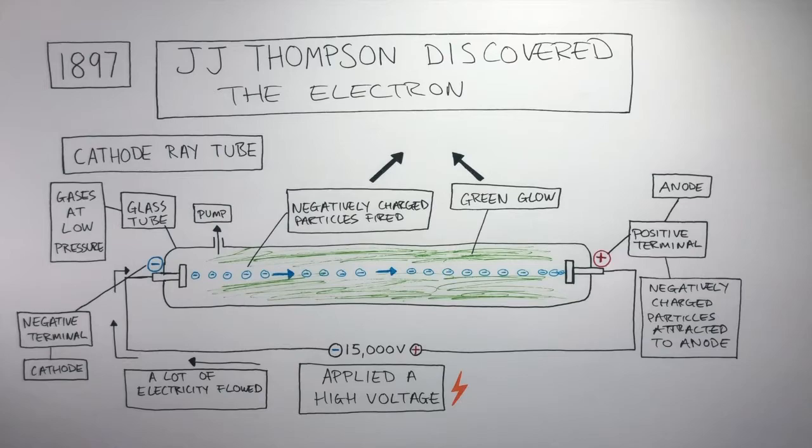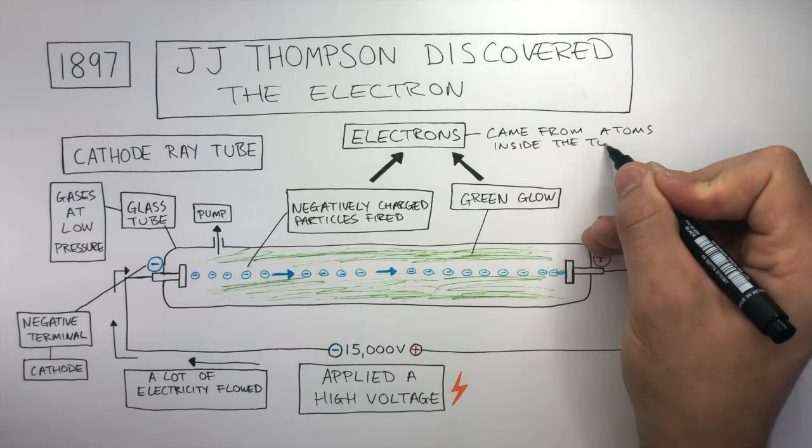He called these negatively charged particles electrons, and he was the first to discover electrons. Before this, people thought there was nothing smaller than the atom. Thompson believed these electrons came from the atoms inside the tube.